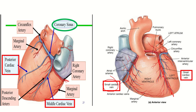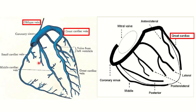The great cardiac vein ascends and finally drains into the coronary sinus. Another small vein supplies part of the left atrium and ventricle, travels and opens into the coronary sinus. In the posterior part we can see the middle cardiac vein, which lies along the posterior interventricular groove. The posterior cardiac vein also drains into the coronary sinus, along with other small branches.